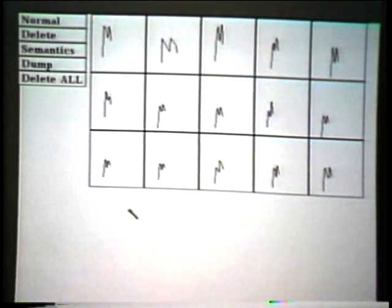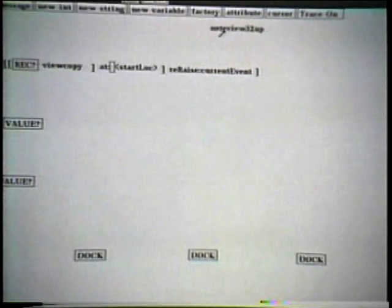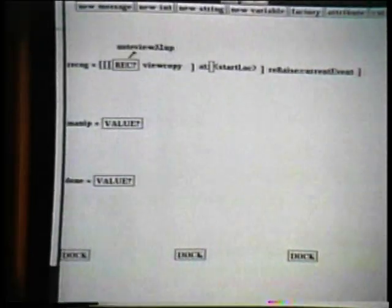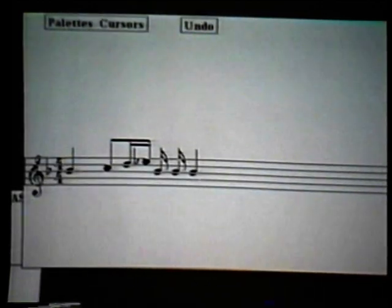Now that the examples are entered, I can give the gesture semantics. The semantics are written in an interpreted subset of Objective-C. Here I get the thirty-second note semantics by editing the semantics for the sixteenth note gesture.